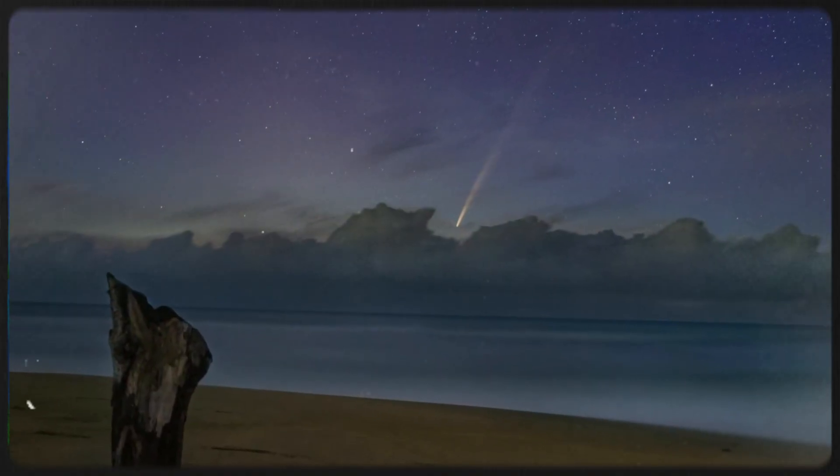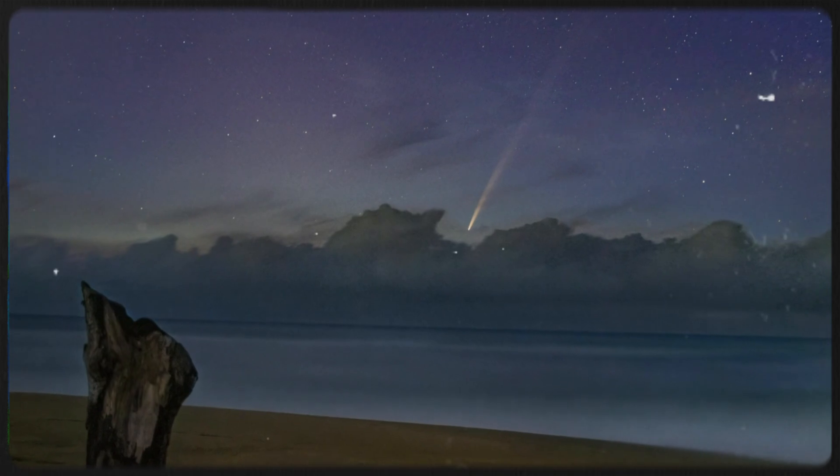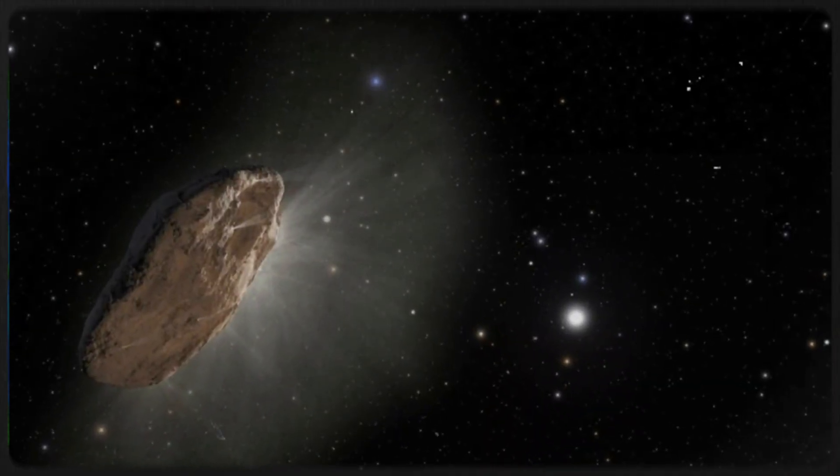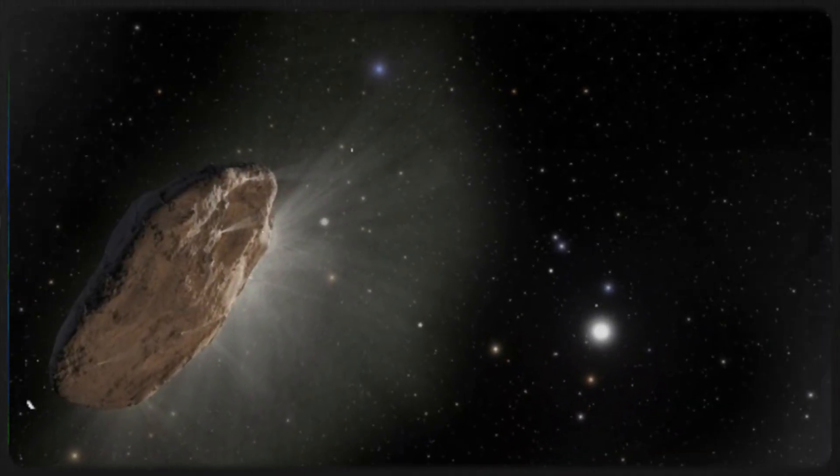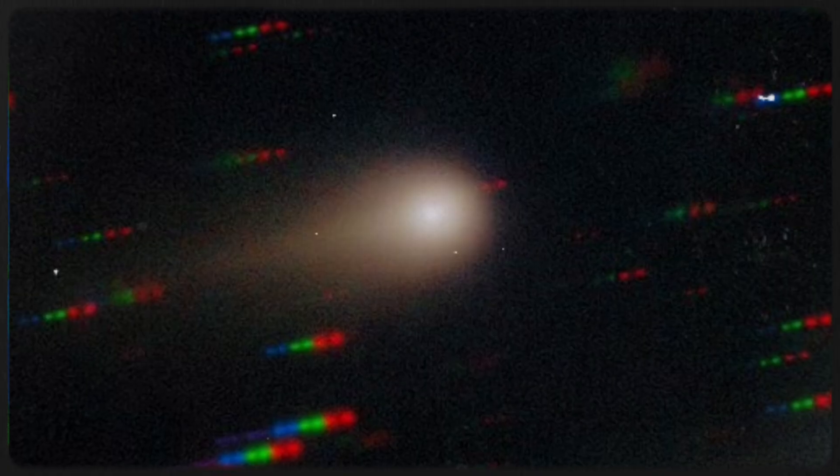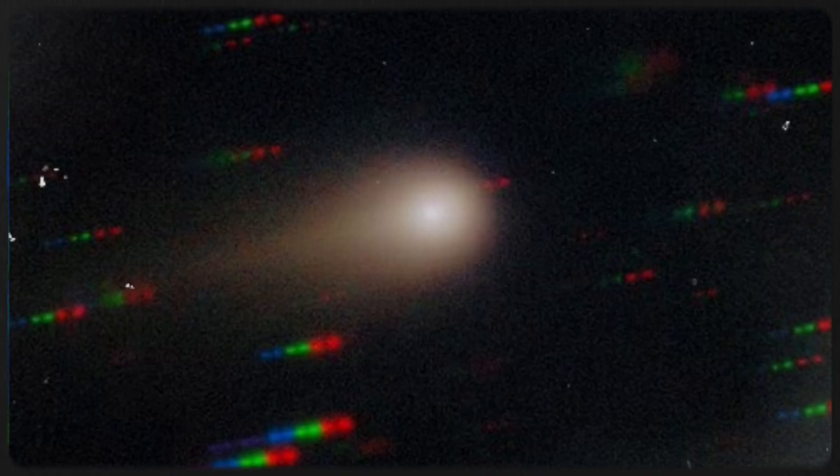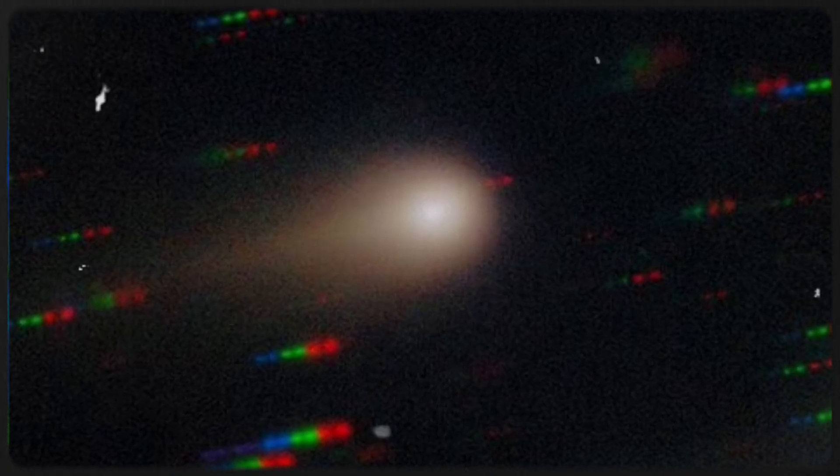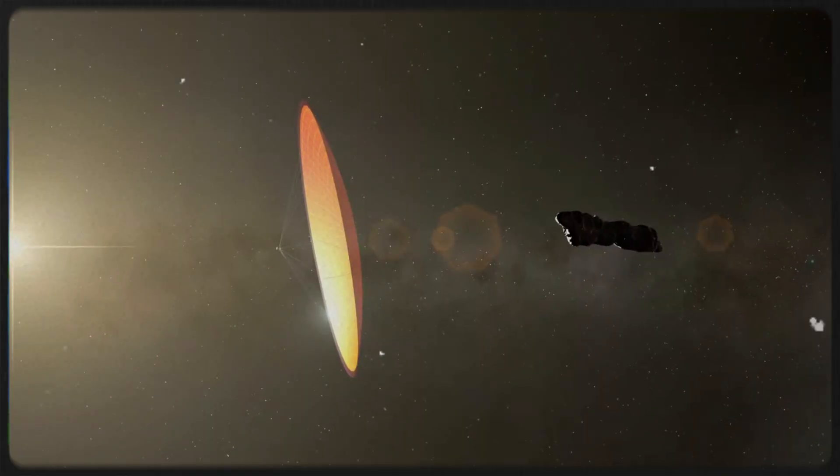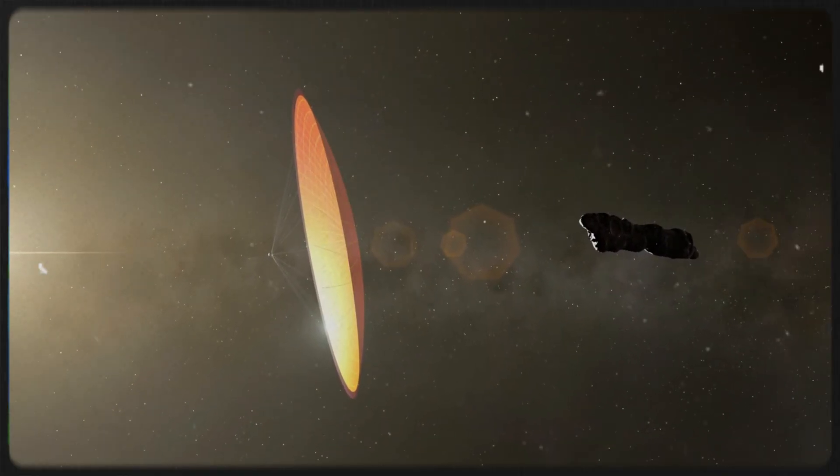The team's investigation zeroed in on the non-gravitational forces that usually nudge and jostle a comet as it journeys closer to our sun. Forces produced by jets of vaporizing gas erupting from the sun-warmed surface and pushing the nucleus ever so slightly off course.